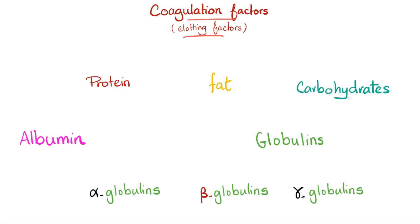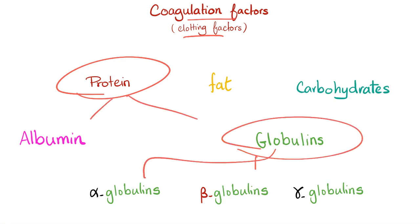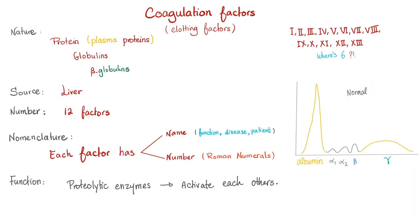Let's talk about the coagulation factor or the clotting factor. Secondary hemostasis. Are they proteins, fat, or carbohydrates? They are freaking proteins. Are they albumin or globulins? They are globulins. Are they alpha globulins, beta globulins, or gamma globulins? They are beta globulins. What are the gamma globulins? These are your antibodies or immunoglobulins. That is IgA, IgE, IgM, IgD, Ig whatever. Coagulation factors: they are proteins, specifically plasma proteins. They are globulins, specifically beta globulins. The source, they come from the liver. Yeah, albumin and globulin, they come from the liver. Number: we have 12. Well, the last one is 13. Yeah, but factor 6 does not exist.